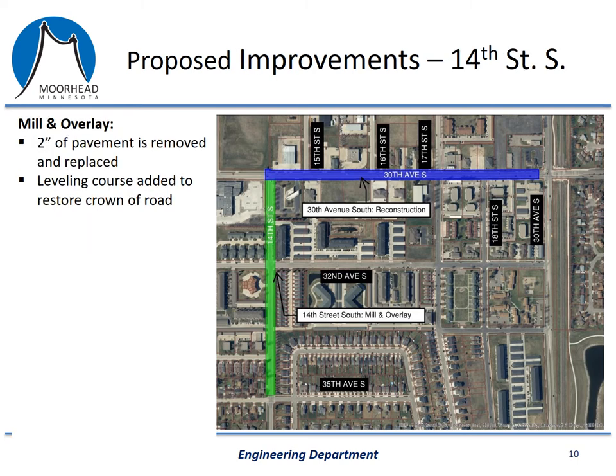The scope of work on 14th Street South is relatively simple and includes a mill and overlay, meaning we will remove and replace only the top couple inches of pavement. Along certain areas of the road, we will add a leveling course and reshape the crown of the road to improve drainage.